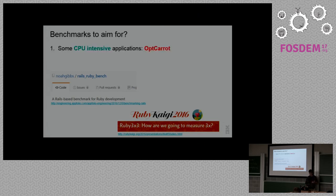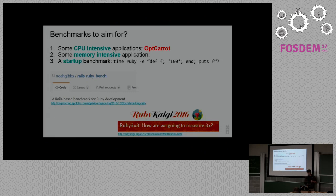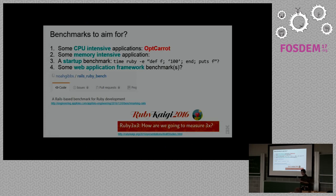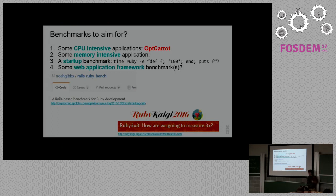We need a variety of benchmarks. Optcarrot's a great start for a CPU-intensive benchmark, but we also need some memory-intensive benchmarks, probably a startup benchmark, and some web application framework benchmarking. I have no idea how to benchmark a web application framework — that's way outside my skill set. The good news is I managed to inspire Noah Gibbs to go and start trying to do this. For those interested in Rails performance, go look at his repo, leave some comments on his approach.